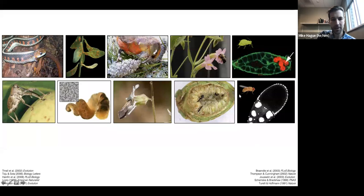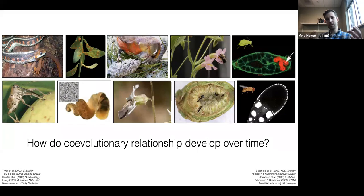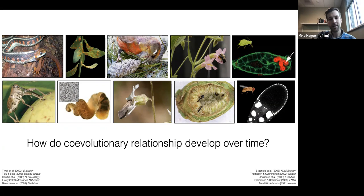I'm broadly interested in how co-evolutionary relationships develop over time in pairwise interactions between species like predator and prey or host and endosymbiont. Studying these interactions from an evolutionary standpoint is really compelling because the agent of selection is another organism that's also capable of undergoing adaptive evolution. In many instances, organisms are trying to adapt to another organism that's a moving target, and this can generate really rapid adaptation and counter-adaptation co-evolutionary dynamics.